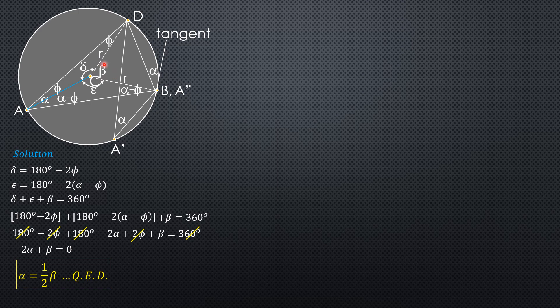Which is in this case one half of beta. The subtended arc is defined by the central angle beta. Now for the second proof or demonstration.